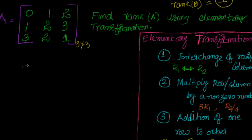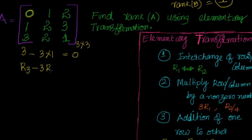Looking at matrix A, I see a zero element. Whenever there's a zero, it catches my attention because I want to use that row or column to make other elements zero, simplifying the determinant calculation. If the determinant is not equal to 0, the rank is 3. To make the first element of R2 become 0, I notice I have 3 and 1, and 3 minus 3×1 = 0. So I apply the transformation R2 = R3 minus 3×R2.